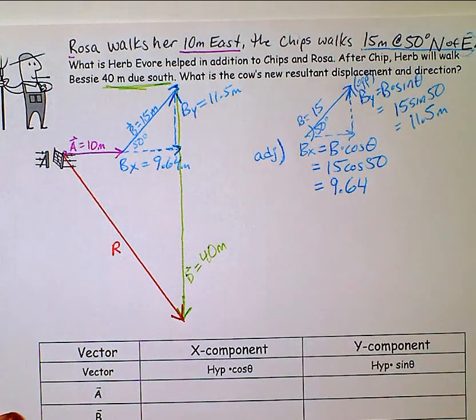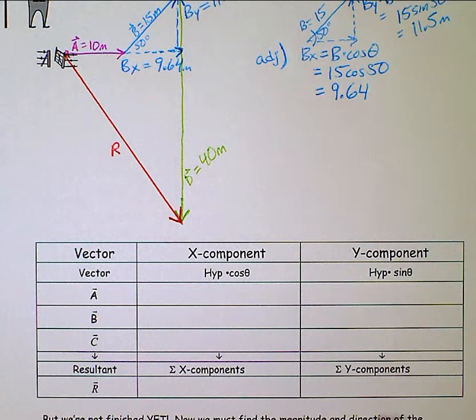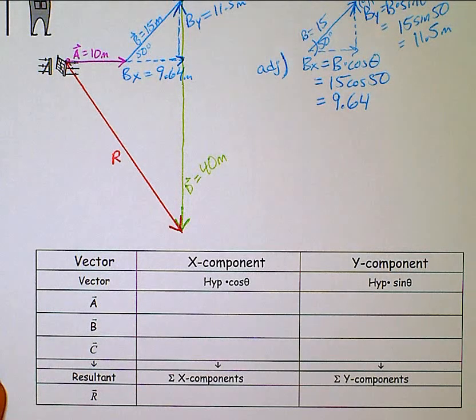Now that I've got my diagonal broken into its two parts, I can continue from here on out. So I need to sum up all the x and y coordinates and find my resultant. And then I'm going to do my Pythagorean theorem and inverse tangent with the resultant.